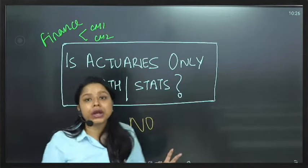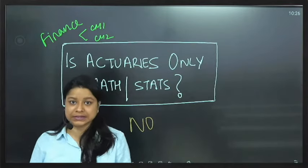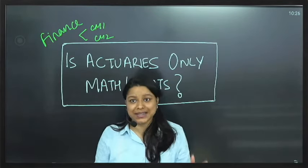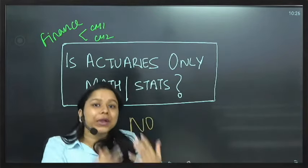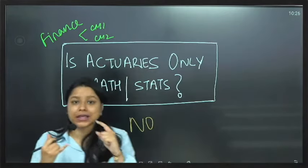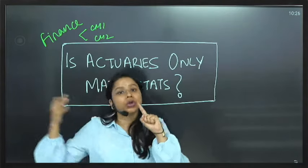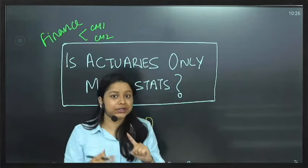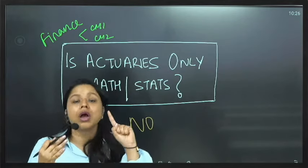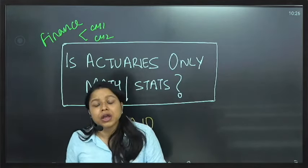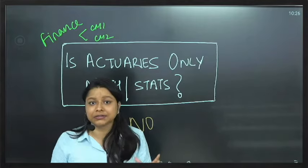Then you learn about basic, very basic statistics in paper such as CS1. After this you build upon different models like your no-claim discount model that you use in general insurance, and then we will be learning about Markov chains, Markov jump processes, all these different things.